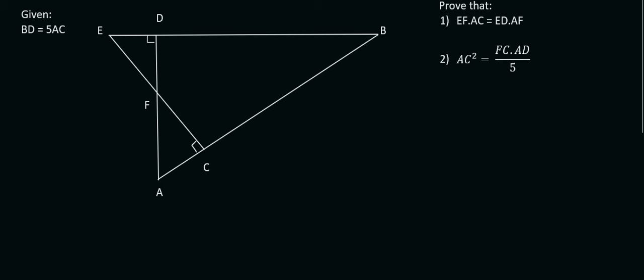In this question we have been given the fact that BD is 5 times the length of AC, so we must keep that in mind in case we need to use it later. The first question says prove the following. We can clearly see that there are no parallel lines in this question, so that means we're not going to be doing proportionality.